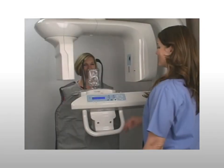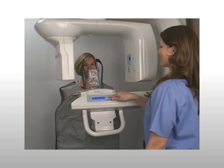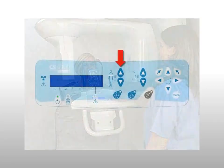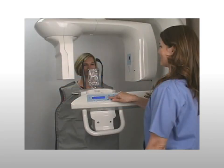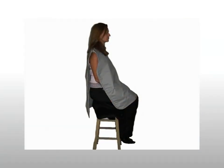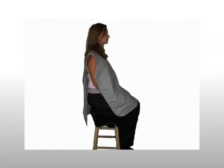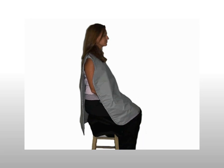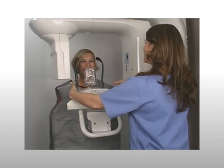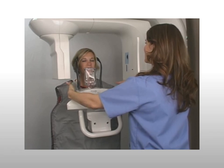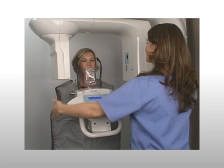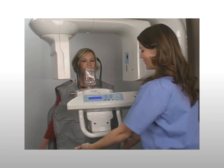To adjust the machine to the patient's height, use the height adjustment button to move the machine up or down to enable the patient to comfortably bite on the bite block. If the patient is tall, have the patient sit on a stool and adjust the machine accordingly. After the machine is at the correct height, open the temple supports and instruct the patient to step forward and close on the bite block.